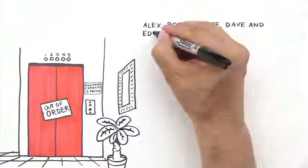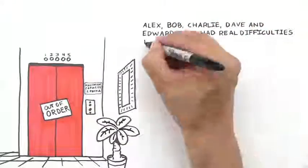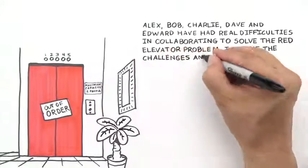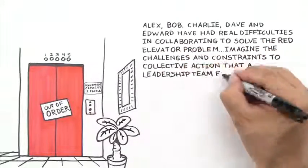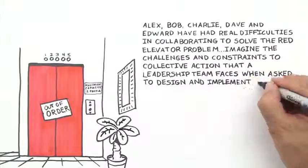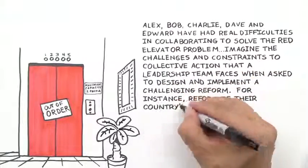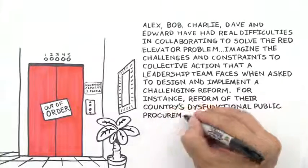Alex, Bob, Charlie, Dave, and Edward have had real difficulties in collaborating to solve the red elevator problem. Imagine the challenges and constraints to collective action that a leadership team faces when asked to design and implement a challenging reform. For instance, reform of their country's highly dysfunctional public procurement system.